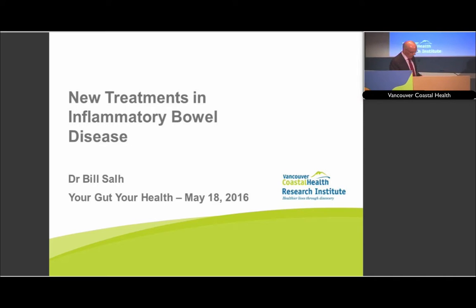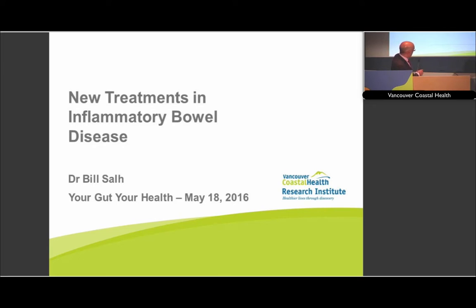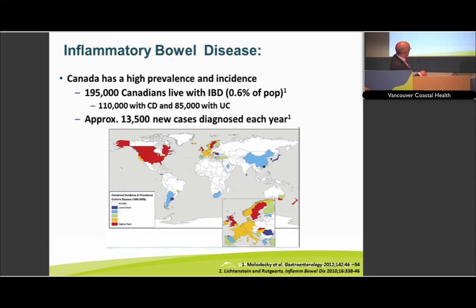Thank you, Jim. I thank Gail for preparing you all for this presentation. What I'm going to start off with is a recap of the incidence of IBD throughout the world. This is what's known as a heat map. In Canada, there are about 14,000 cases diagnosed each year, and about half a percent of the population have these disorders collectively, with roughly a 50-50 split — perhaps Crohn's disease making up the majority of cases we see here in Canada.